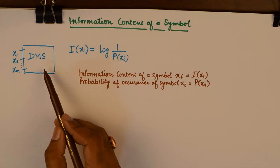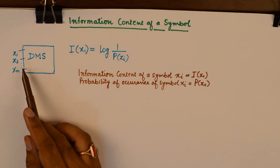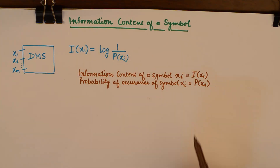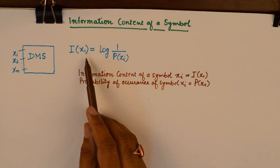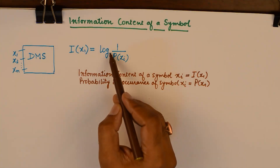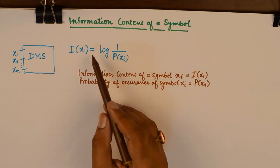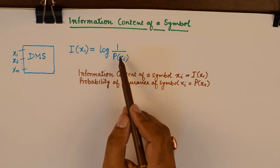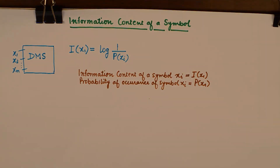Now over here I have a discrete memoryless system, DMS, with certain symbols. If I know the probability of occurrence of the symbols, then I can find out the information content in that symbol. It is a pretty straightforward formula: the information content of a symbol is equal to the log of 1 upon the probability of that symbol.